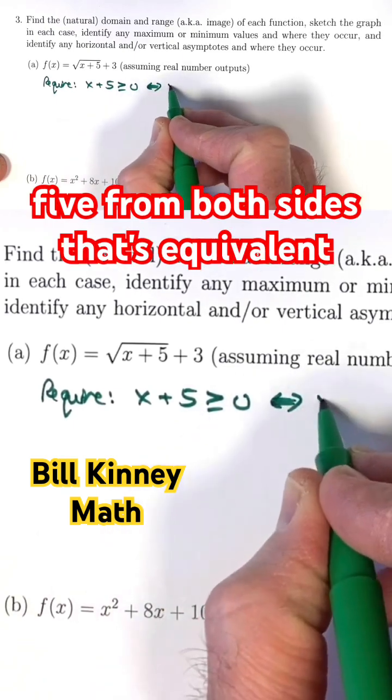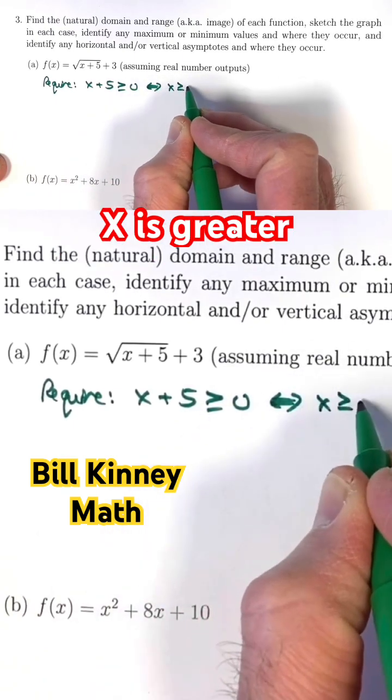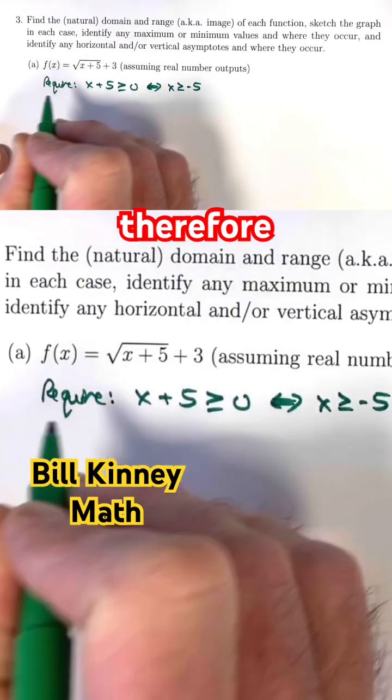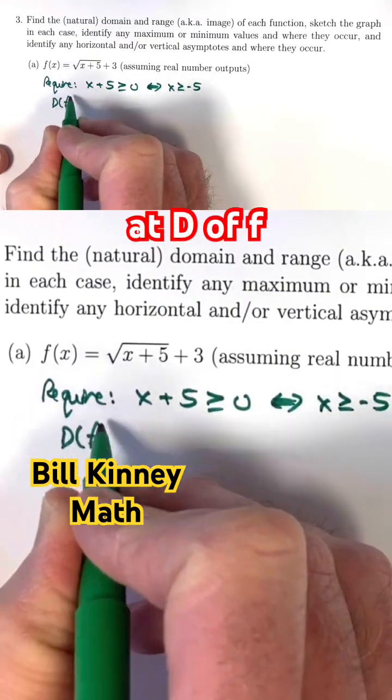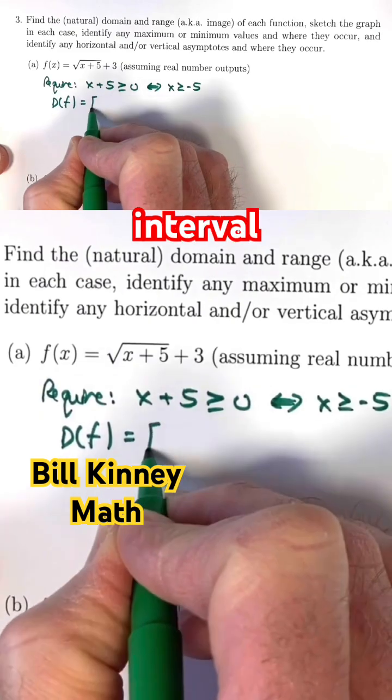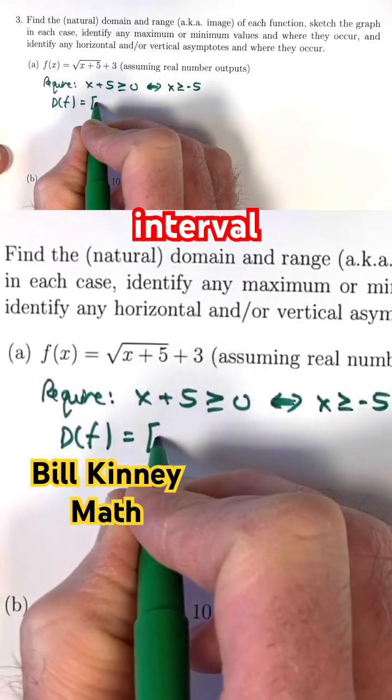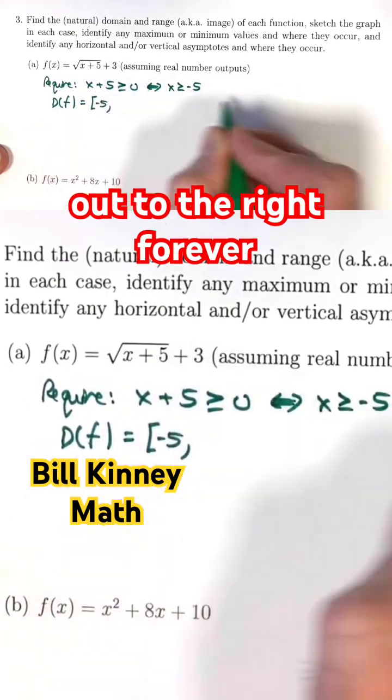Subtracting 5 from both sides, that's equivalent to saying x is greater than or equal to negative 5. Therefore, the domain of f, written as D(f) in interval notation, would be the closed interval from negative 5 out to the right forever.